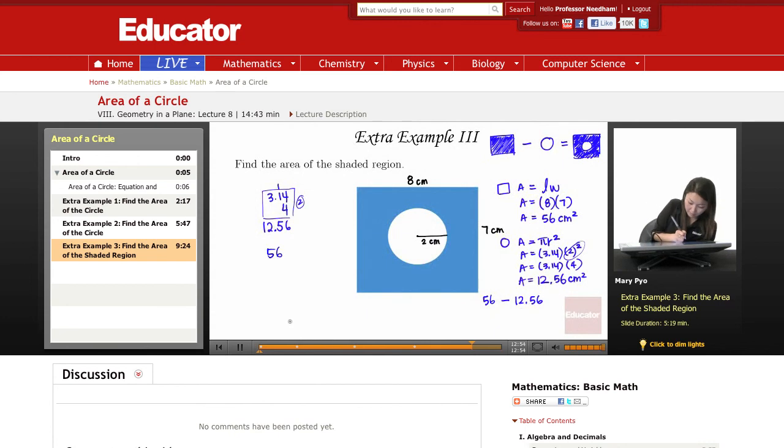56 minus, and remember when you subtract decimals, you have to line them up. Where's the decimal in this number? If you don't see it, it's always at the end, right there. Minus 12 point. Make sure only when you subtract, add or subtract, the decimals have to line up.